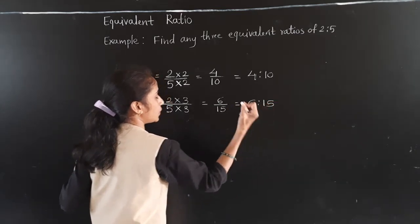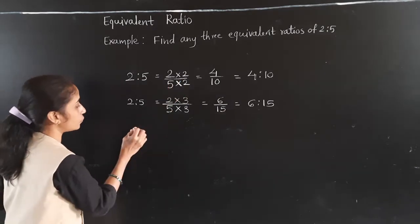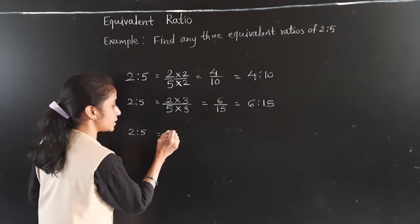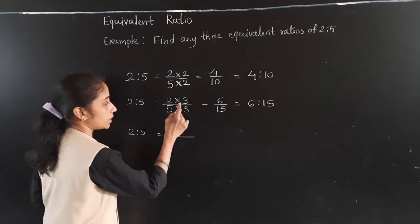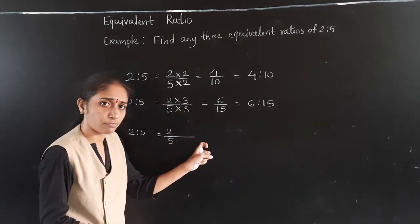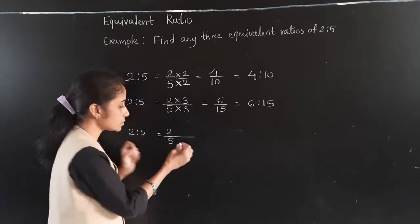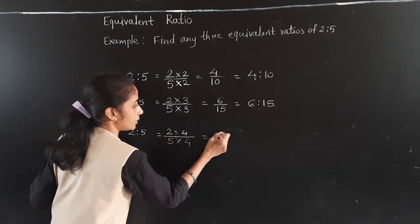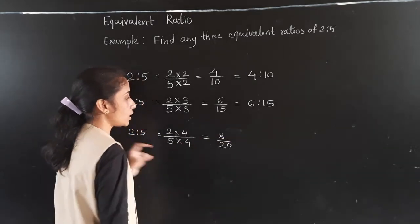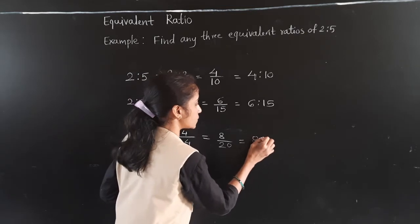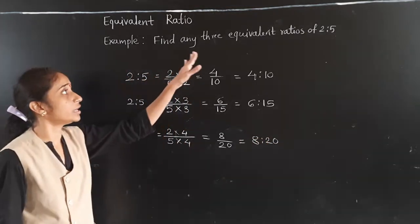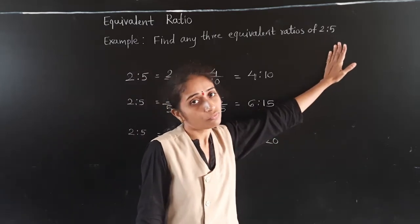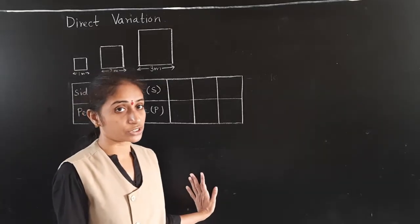6 is to 15 is another equivalent ratio. For the third equivalent ratio, we multiply 2 upon 5 by 4: 2 fours are 8, 5 fours are 20, giving us 8 is to 20. So the 3 equivalent ratios of 2 is to 5 are: 4 is to 10, 6 is to 15, and 8 is to 20.